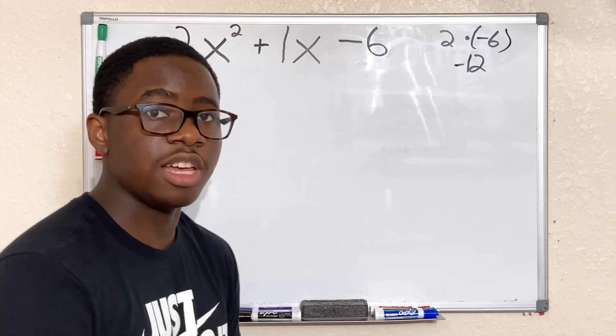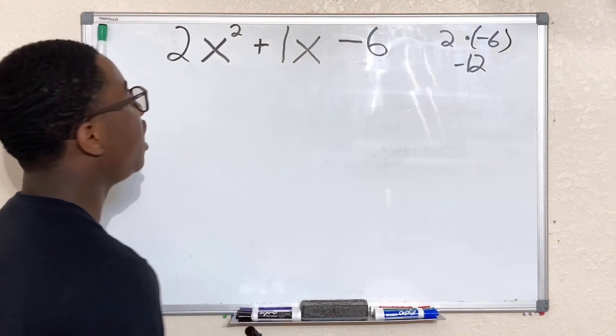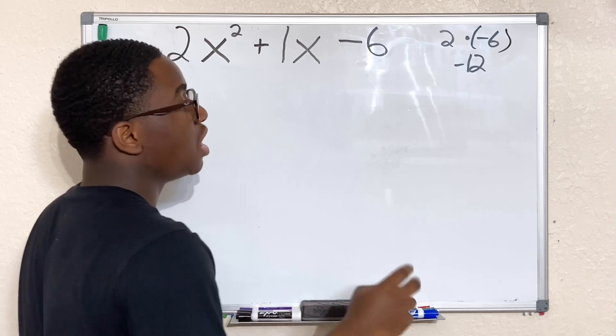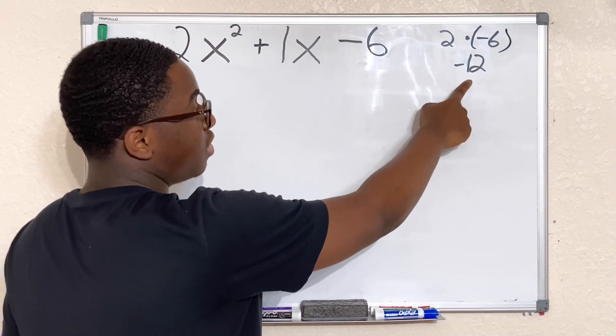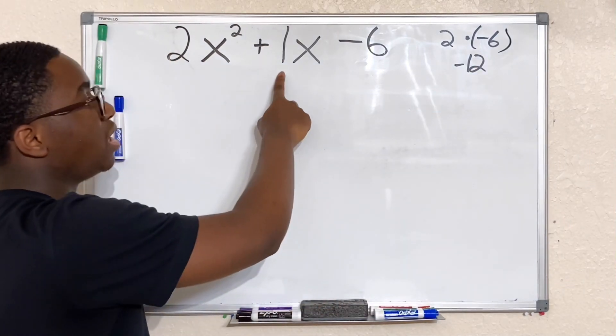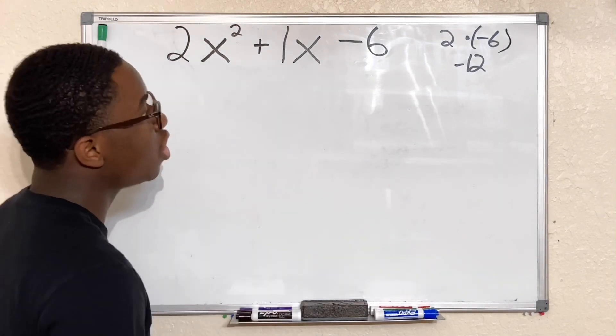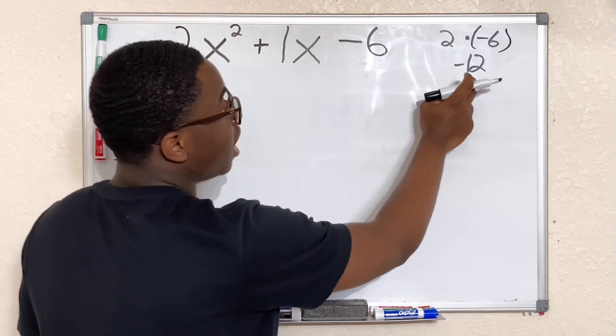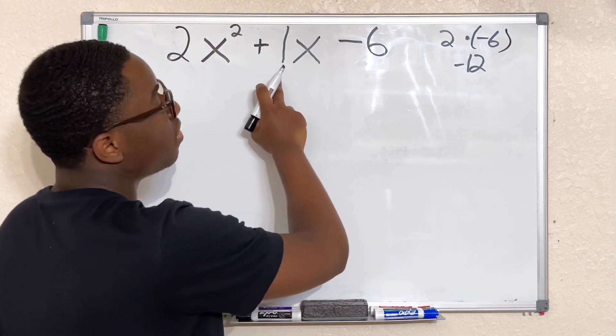Now the second step after multiplying a and c is finding two numbers that multiply to give us -12 but also add up to give us 1. So we need to find two numbers that multiply to give us -12 and add up to give us 1.